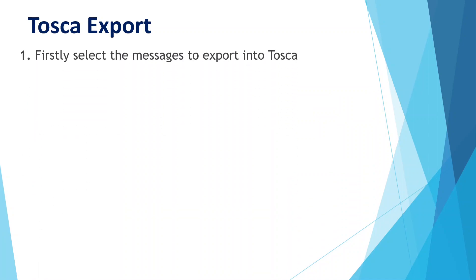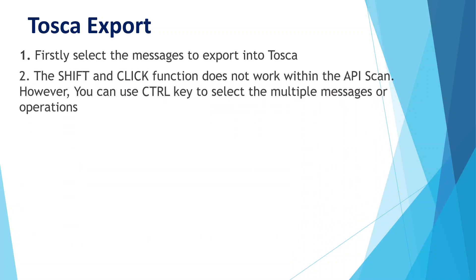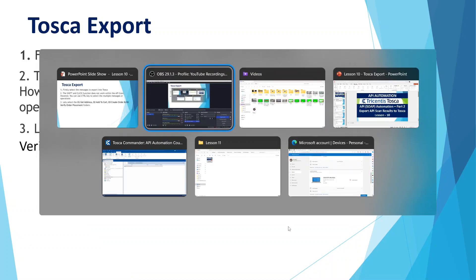Firstly, we need to select all the messages we would like to export into Tosca. Note that Shift-clicking to select multiple functions does not work in API scan; however, you can use the Control key to select multiple messages or operations. Now let us go back to Tricentis Tosca API scan.